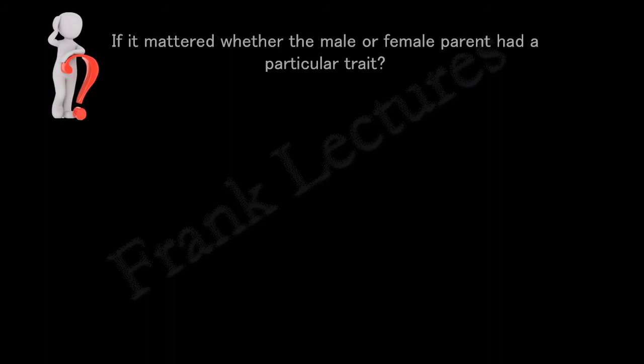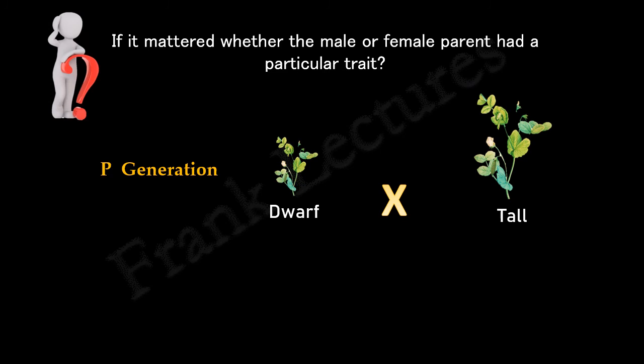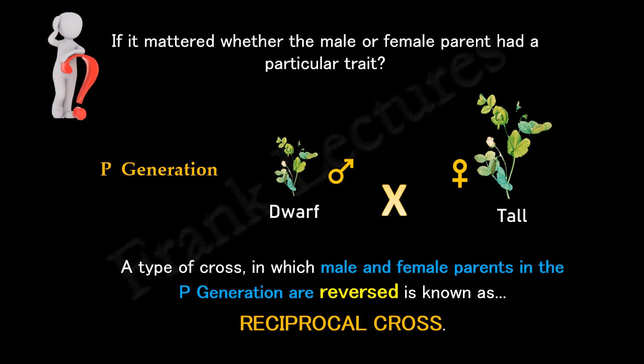Mendel did another set of experiments to find out if it mattered whether the male or female parent had a particular trait. He once again performed the monohybrid cross between two pure lines, but this time he took pollen from the dwarf plant and transferred it to the stigma of the tall plant — meaning the dwarf plant is now male and the tall plant is female, the reverse of the previous cross. This type of cross, in which the male and female parents in the P generation are reversed, is known as a reciprocal cross.